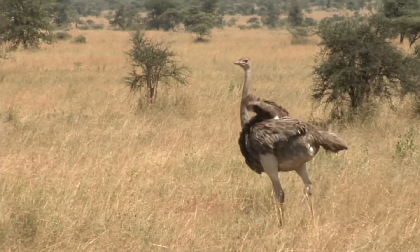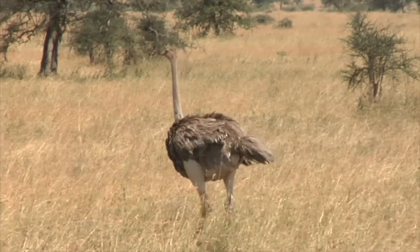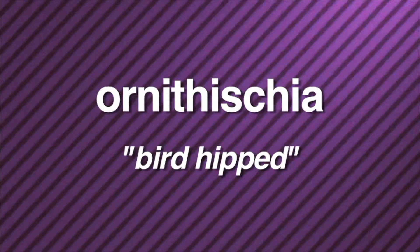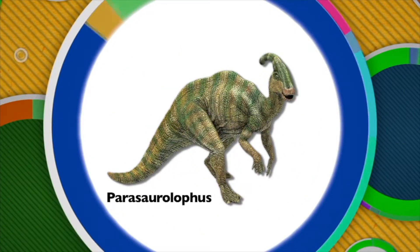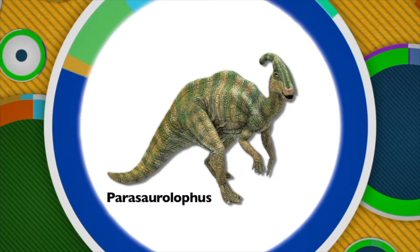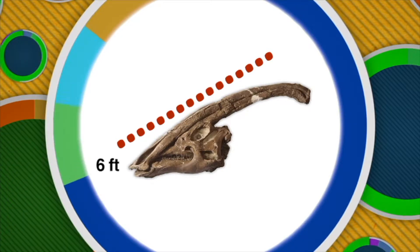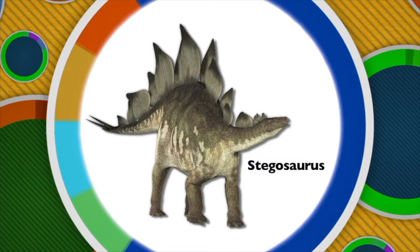Other dinosaurs had hips like modern-day birds. Their hip structure caused their legs to stick out from under their bodies. They're known as Ornithischia, which means bird-hipped. Ornithischian dinosaurs came in a wide variety of shapes and sizes and had very unusual features. Some Ornithischian dinosaurs, like Parasaurolophus, walked on two legs. Parasaurolophus is easily recognizable because of the hollow bony crest on top of its head, which could measure up to six feet long.